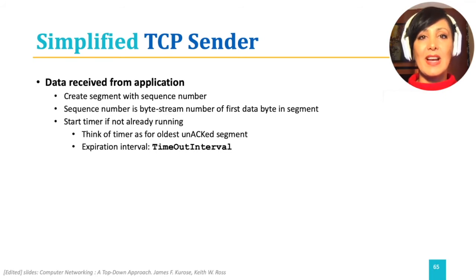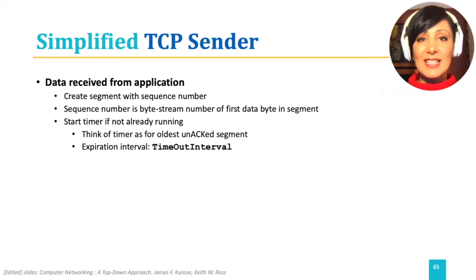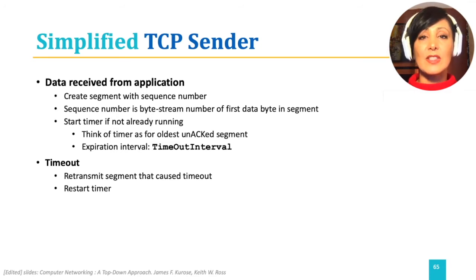The value for this timer, indicated by the timeout interval, is the timeout value previously calculated based on the RTT value and its variations. If a timeout happens, the segment causing the timeout is retransmitted and the timer is restarted.